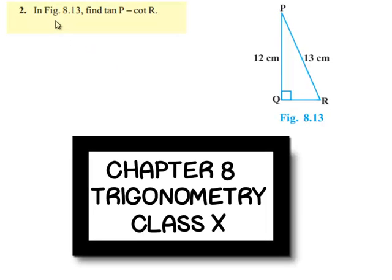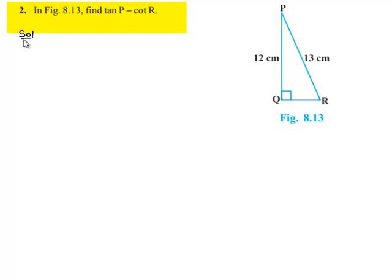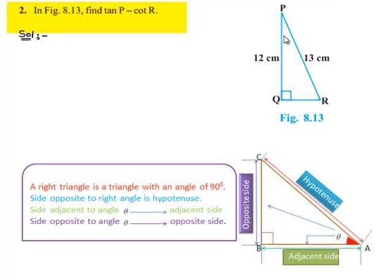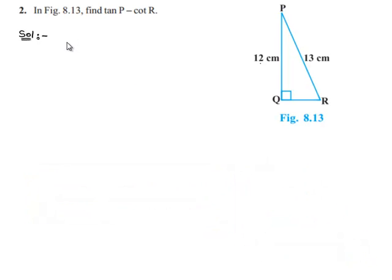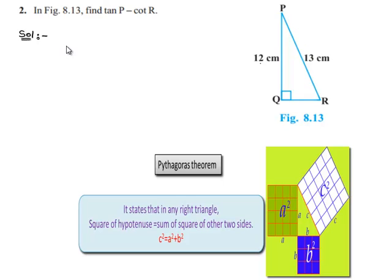Moving on to the second sum in figure 8.13: find tan P minus cot R. Here a triangle PQR is given in which side PQ is 12 centimeters and side PR is 13 centimeters. Now let us find QR by Pythagoras theorem.